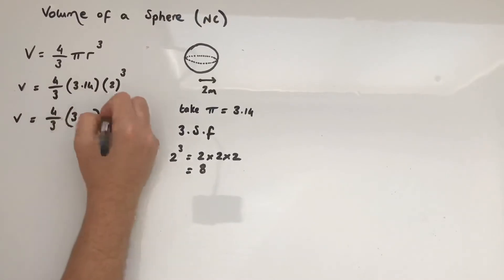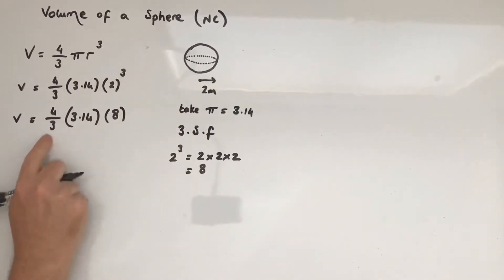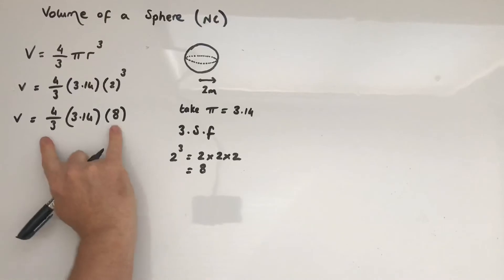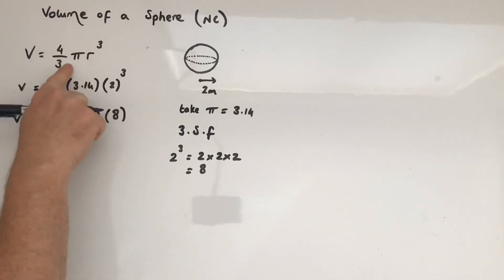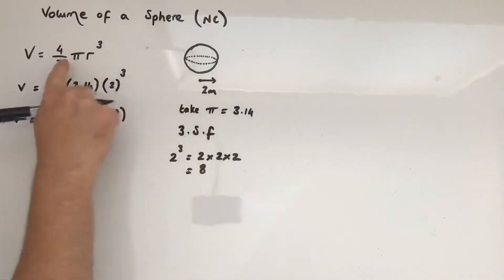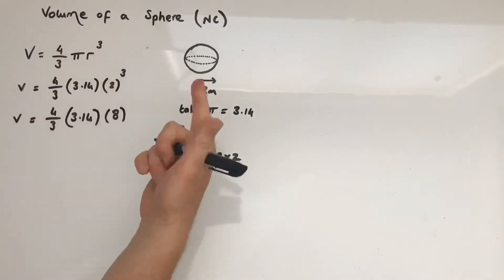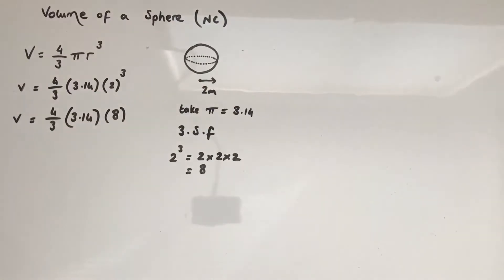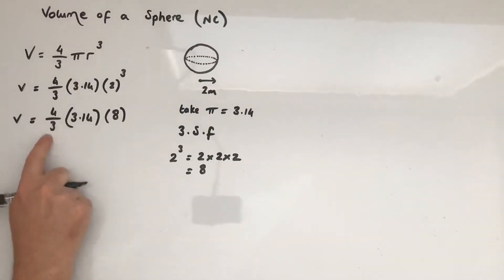If you have watched the previous videos, we have looked for connections. Have you noticed that they've got thirds? Have you noticed that this has got multiples of thirds? Square base pyramid, cone — thirds, four thirds.